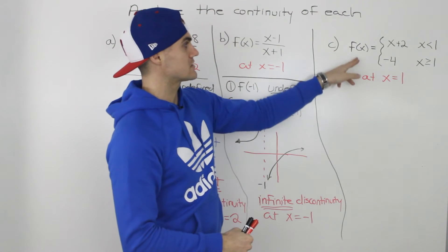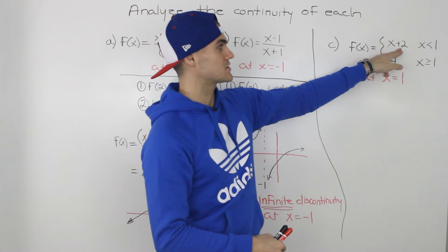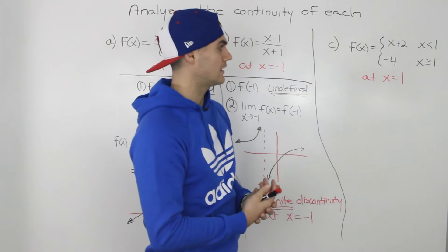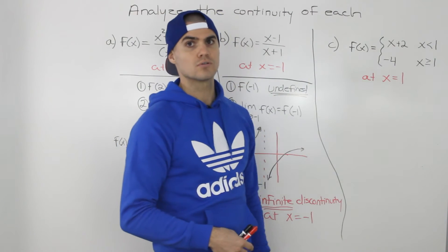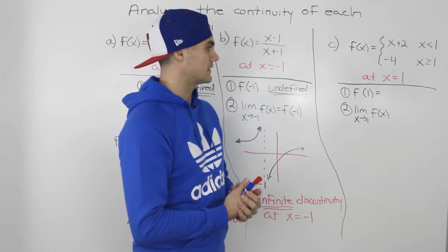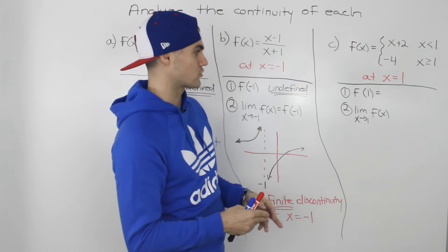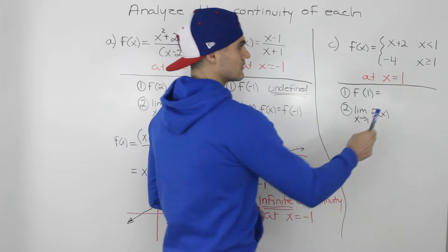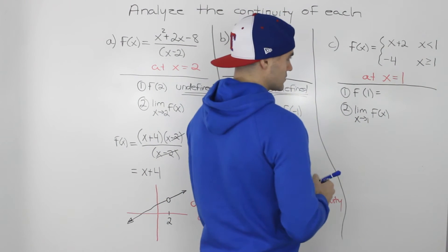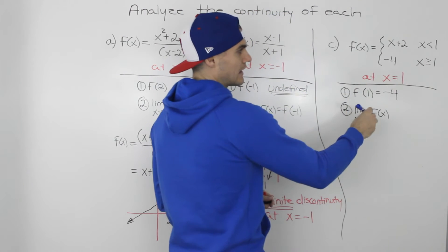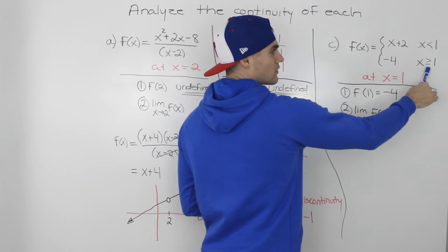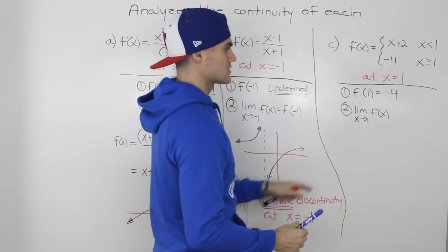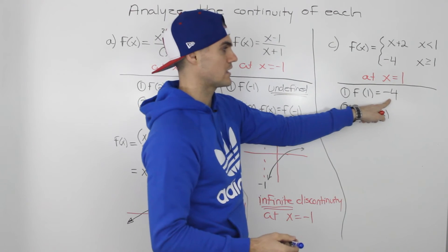Our final example is a piecewise function: f of x equals x plus 2 when x is less than 1, and equals negative 4 when x is greater than or equal to 1. We have to analyze the continuity at the meeting point x equals 1. For condition one, f of 1: at x equals 1 the y value equals negative 4, because the piece x greater than or equal to 1 applies there. So the first condition passes — f of 1 is defined and equals negative 4.